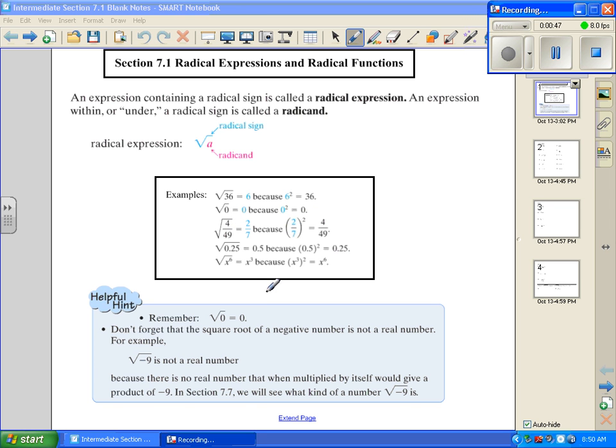So, and if we look down here the square root of x to the sixth is x to the third because x to the third squared equals x to the sixth. So the idea is we want to know what squared equals our radicand.